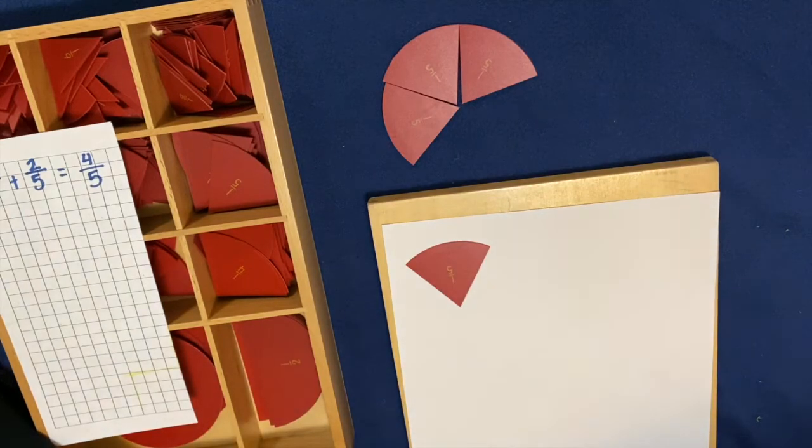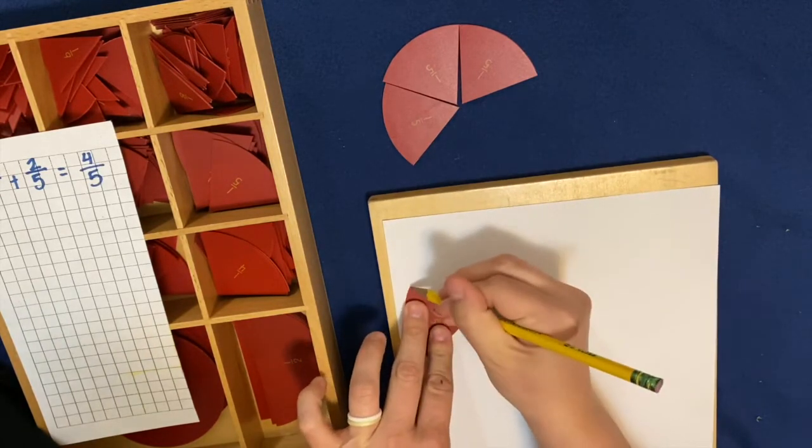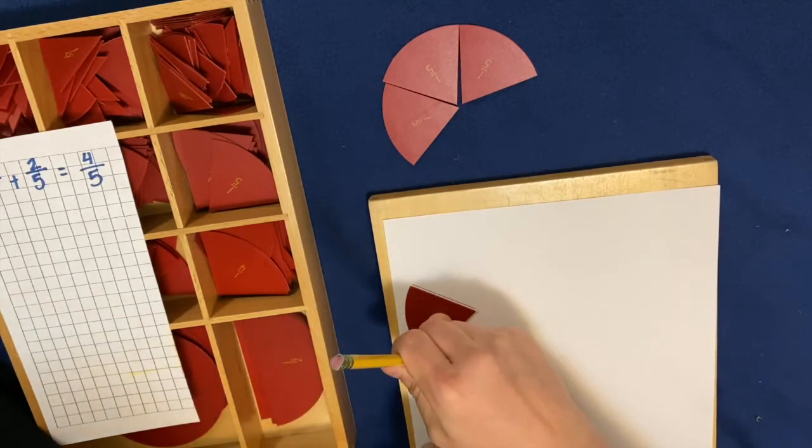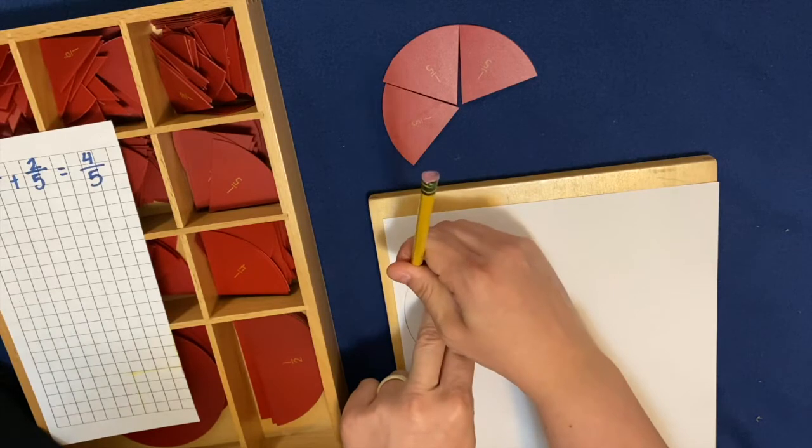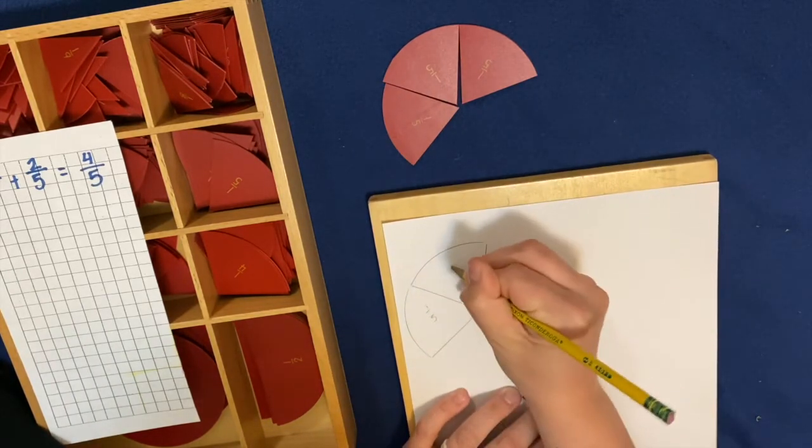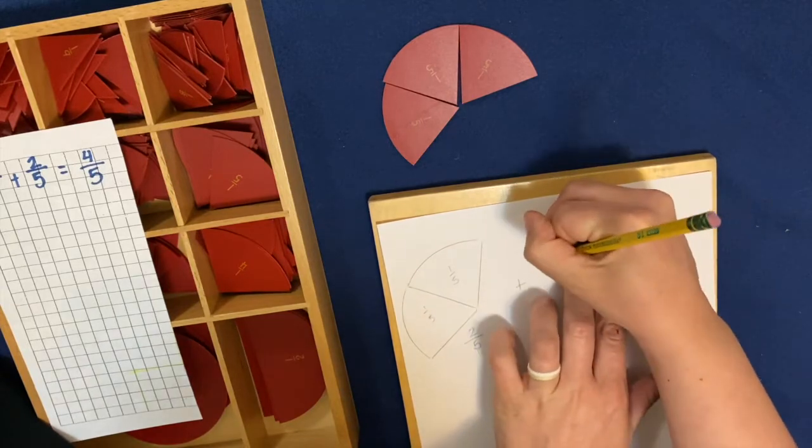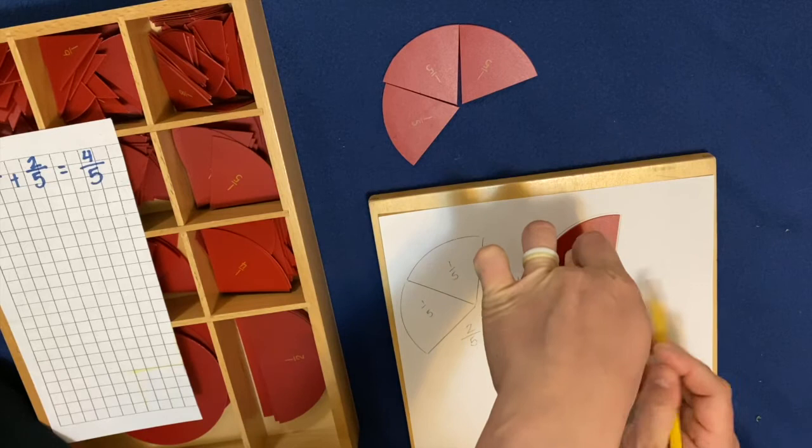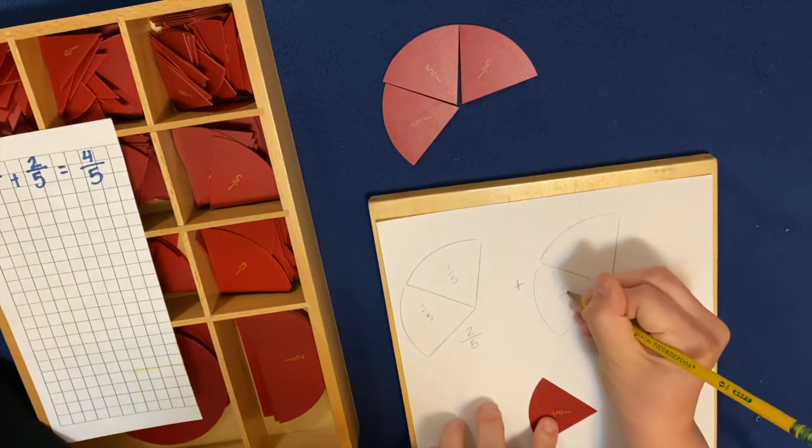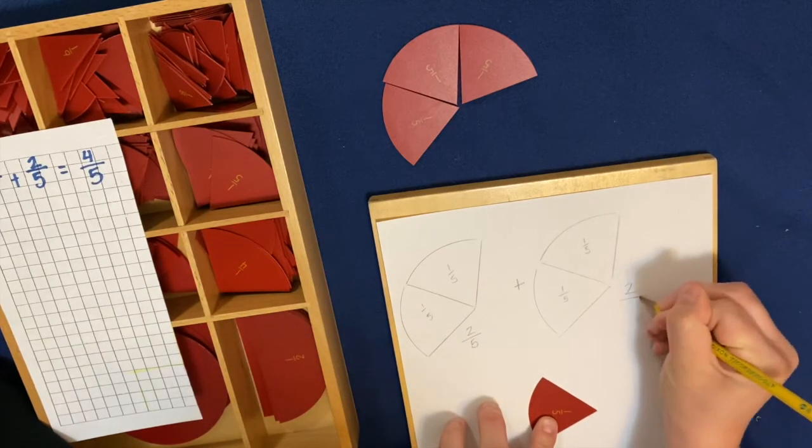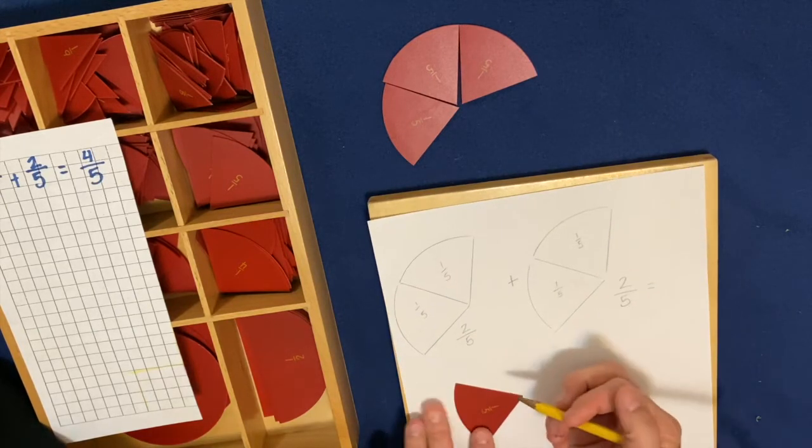I'm going to go ahead and give this a trace. So I'm going to trace my fifths like this, nice and careful. So we're saying two-fifths plus two-fifths equals. We have one, two, three, four.